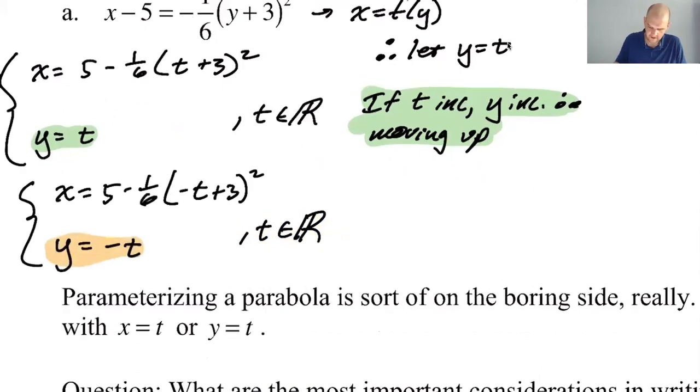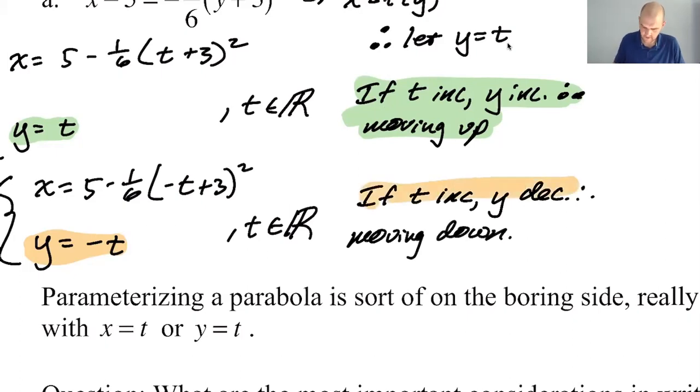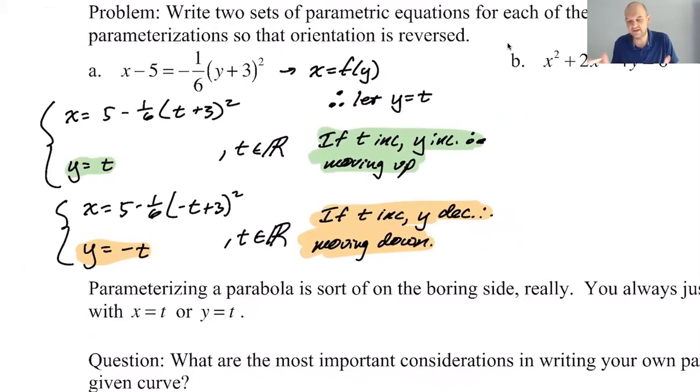And then for this choice, if t increases, y is actually going to decrease. Therefore, we're moving down. So the choices that we made will determine the direction in which you're tracing this out. You don't really have a choice about what x is doing. x is just stuck there. Whatever y does, x just has to follow along. It has to be 5 minus 1/6th of whatever y is plus 3 squared.